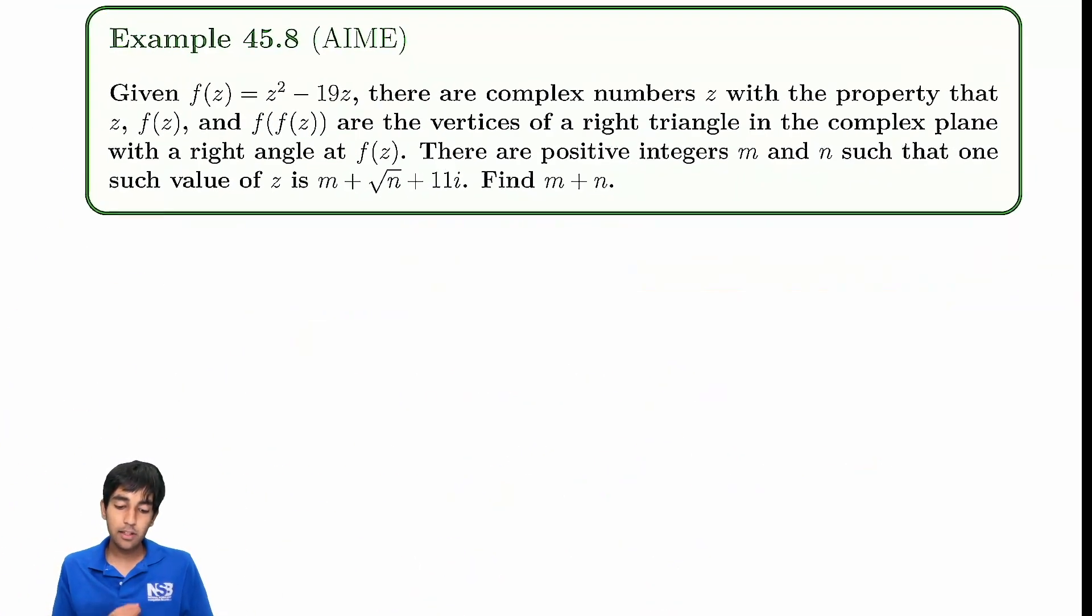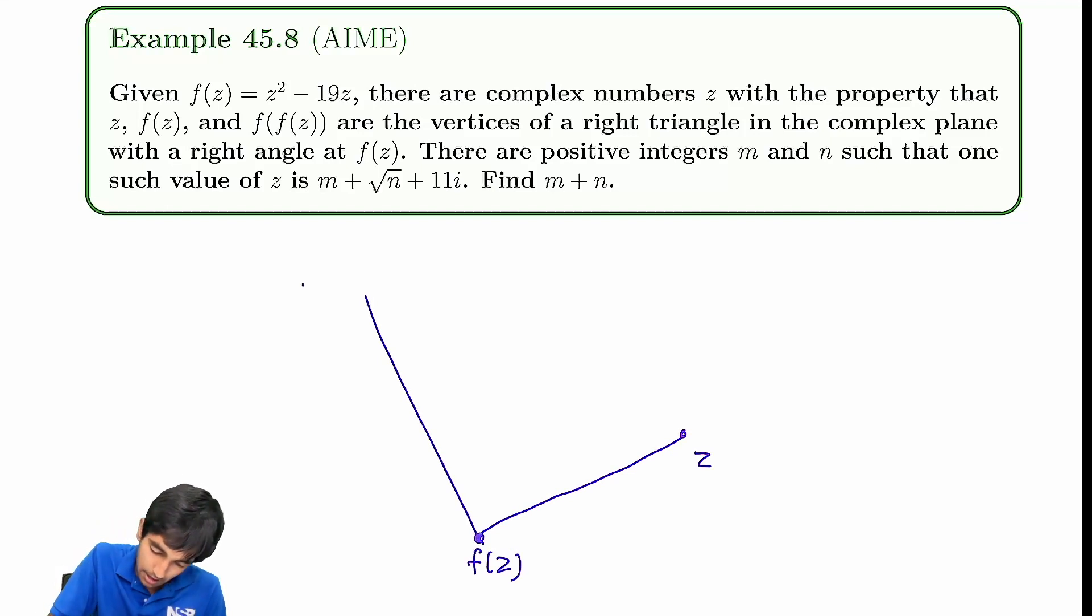And now let's try one slightly harder example that uses the same fundamental idea. f of z is z squared minus 19z. z, f(z), and f(f(z)) are vertices of a right triangle in the complex plane with the right angle at f(z). This is a mouthful. We've got a right triangle: z, f(z), f(f(z)). We form a 90 degree angle here. Find z. How do we do this?